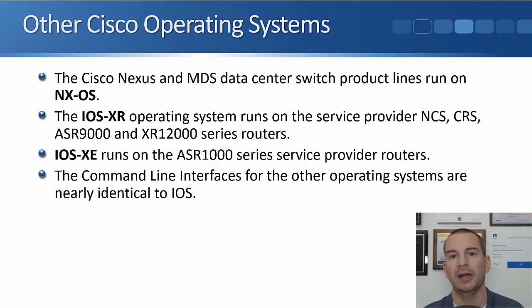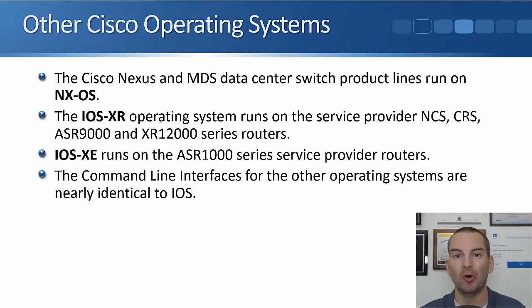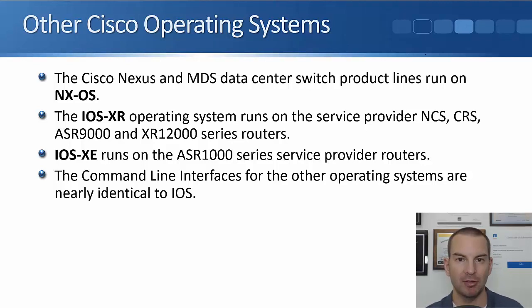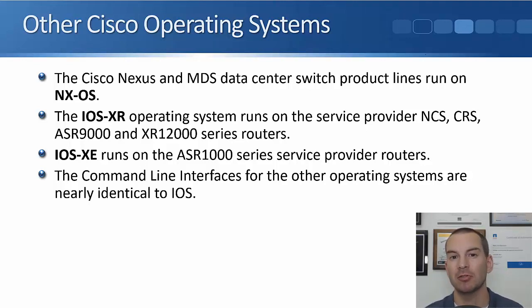You may wonder why there are different operating systems if managing them is essentially the same. The main difference is under the hood. IOS has a monolithic kernel, meaning that if one process running on the router crashes, it can crash the entire router. The other newer operating systems have micro kernels, and processes run in separate protected memory address spaces, so if one process crashes it shouldn't affect the rest of the system.